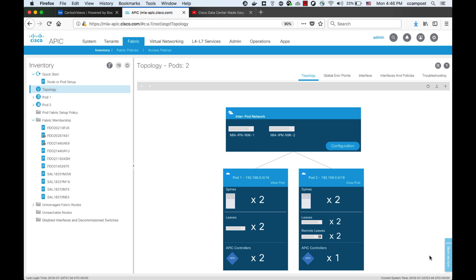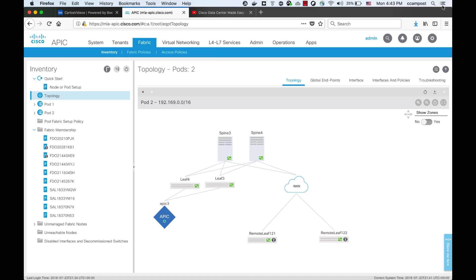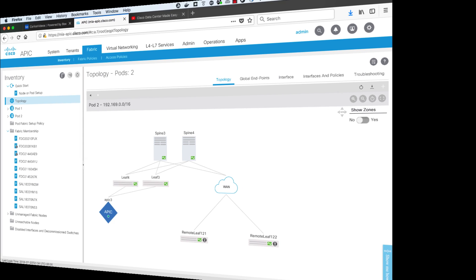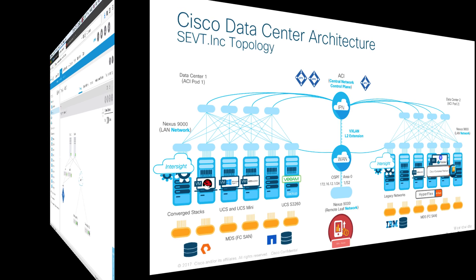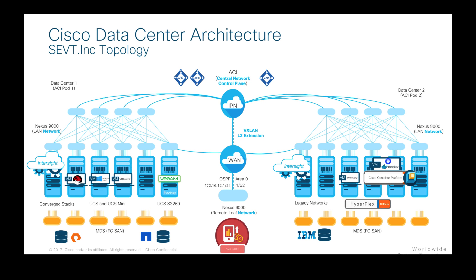We can see that now two remote leaves appear on a graphical display on ACI and we are ready. The remote network got integrated in less than two minutes and I did not even have to go to the branch office myself.